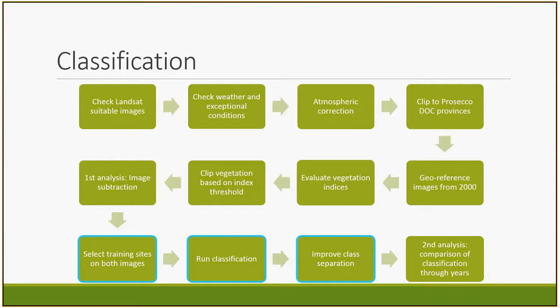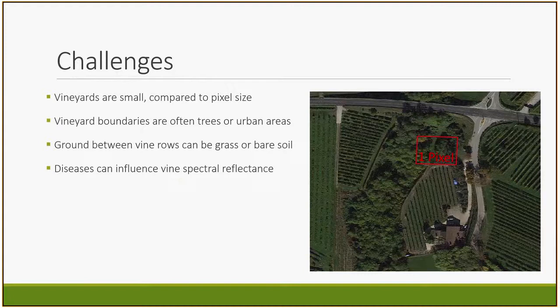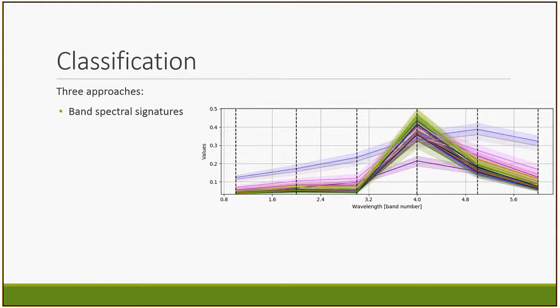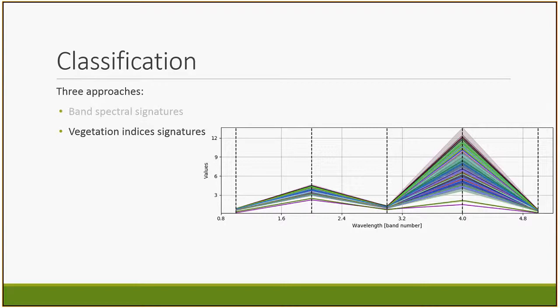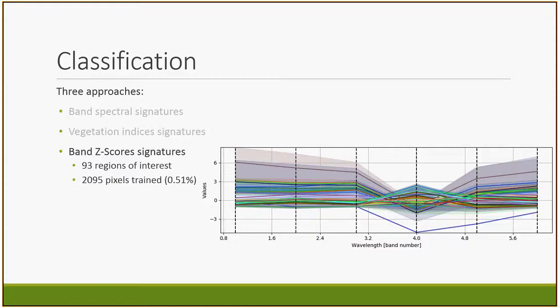Then I started to do some classification. We have a few challenges: there are no big homogeneous areas, the vineyards are quite small even compared to the pixel size, meaning training sites must be many and very small. Vineyard boundaries are quite mixed with trees and urban areas, and the ground between the vines can vary a lot. Also, almost every year some areas are affected by disease, which affects leaf moisture and spectral reflectance. I tested three approaches: first, classifying based on normal spectral signatures; second, using indices as bands in a stacked image; and finally, normalizing all bands in each image using Z-scores and training signatures on the normalized images. This last approach gave the best results for classification.